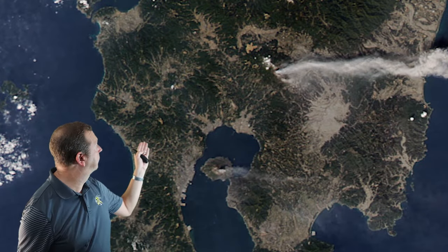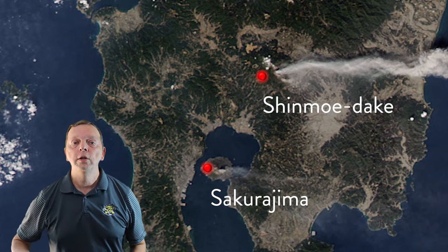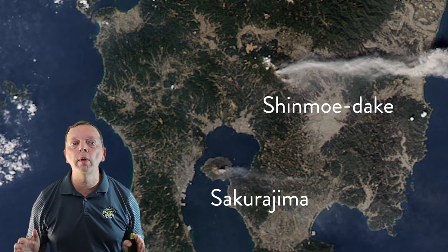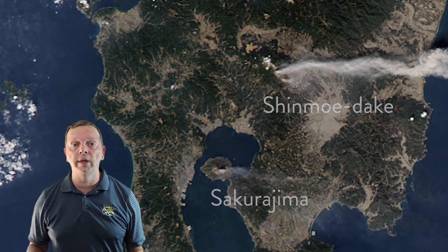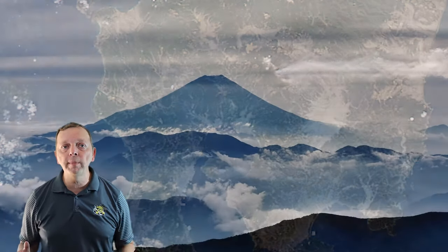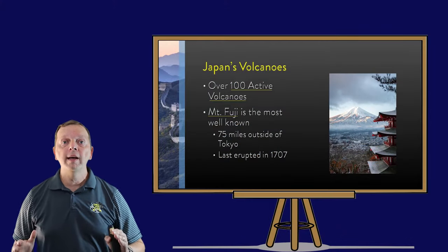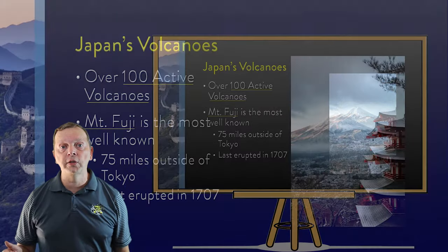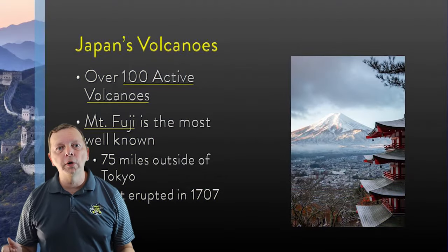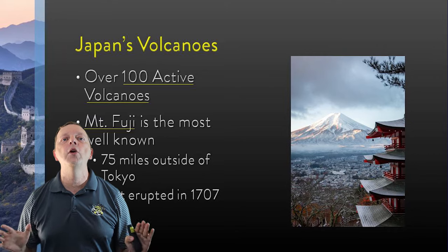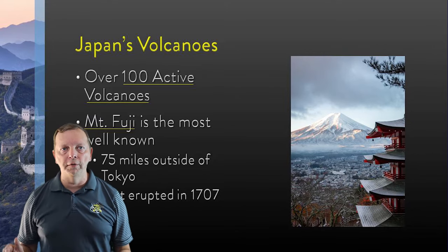This NASA satellite photograph shows the Shinmo Dake and the Sakurajima volcanoes erupting at the same time in 2011. But the most famous Japanese volcano is probably Mount Fuji, which lies just 75 miles from Tokyo. I've been told you can actually see it from the city, though the three times I've been to Tokyo it has always been cloudy, so I've never seen it — though I'm told it's absolutely beautiful.